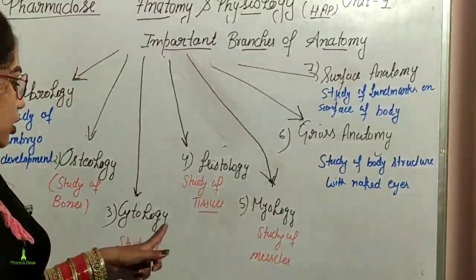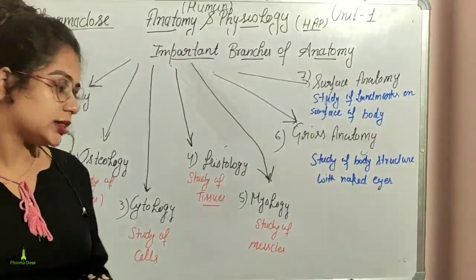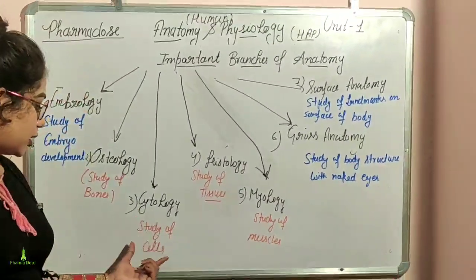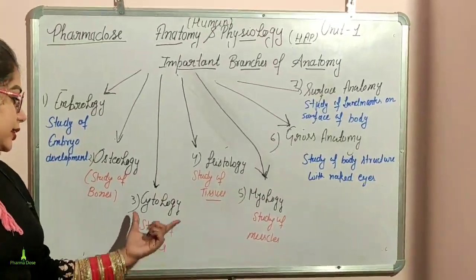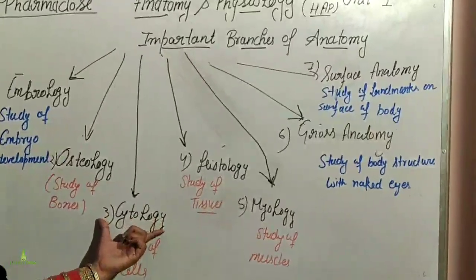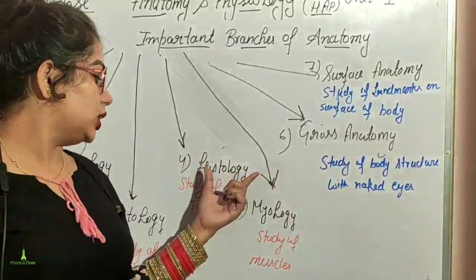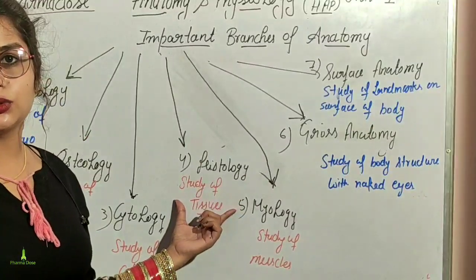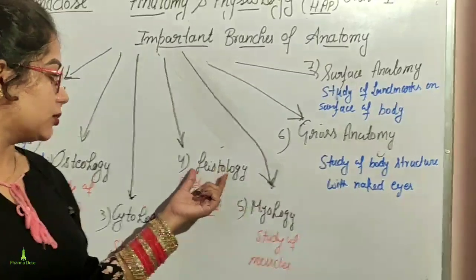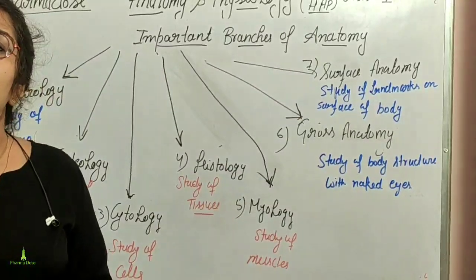Next is Cytology — the study of cells. After that is Histology — the study of tissues. These branches help us understand the body at the cellular and tissue levels.